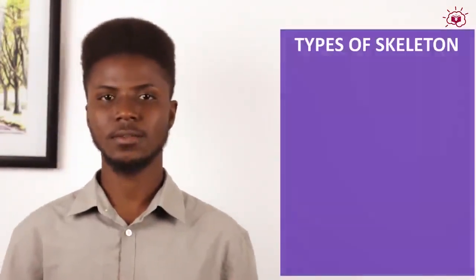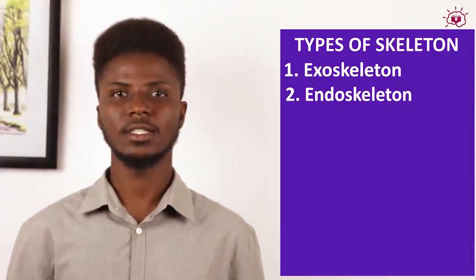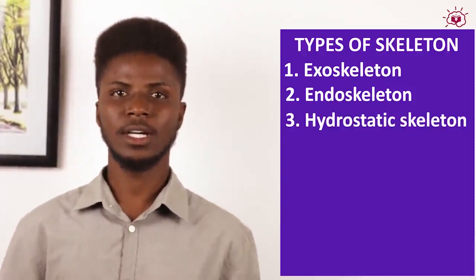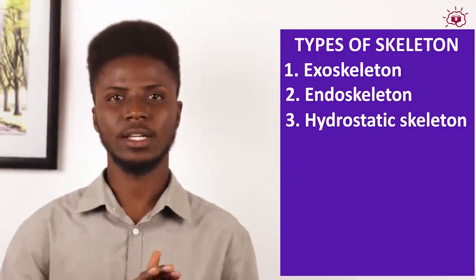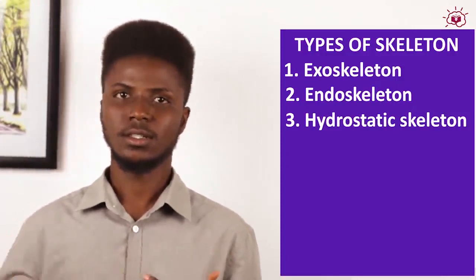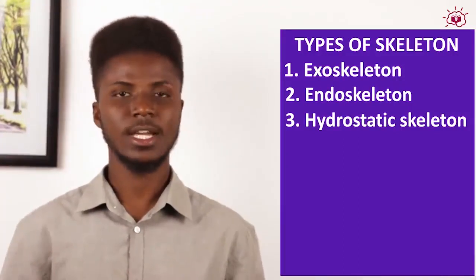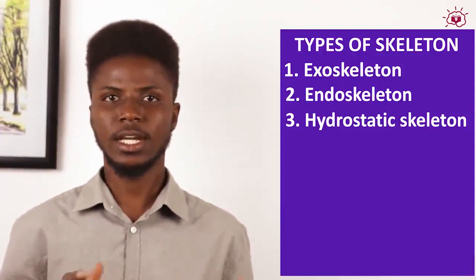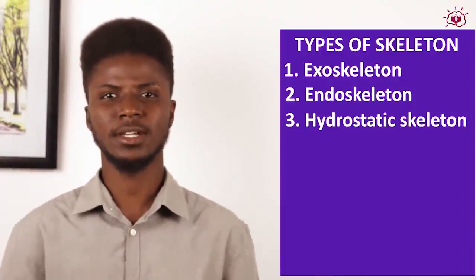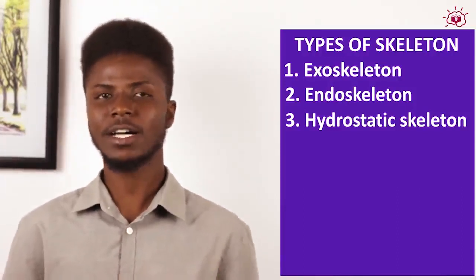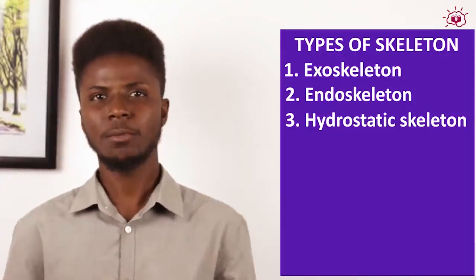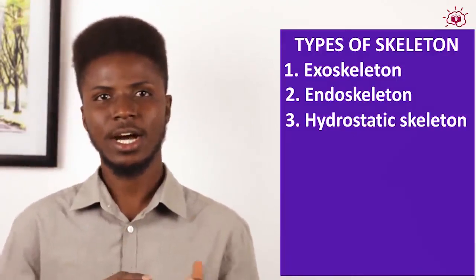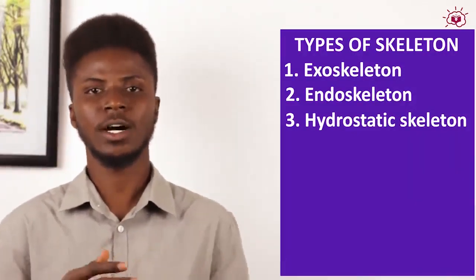There are three types of skeleton: the exoskeleton, the endoskeleton, and the hydrostatic skeleton. The exoskeleton is like an armor that covers animals such as arthropods, insects, and crustaceans like scorpions and centipedes. This exoskeleton is made of chitin or cortical, which is a proteinous, mucilaginous material. It enables the animal to move and protects its soft insides.